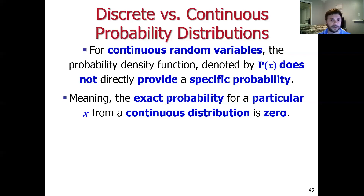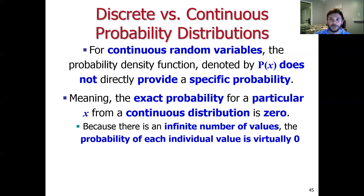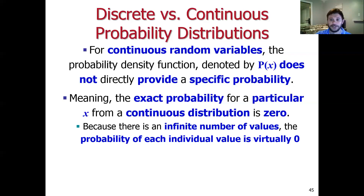The probability that you are exactly five foot eleven inches and four one-thousandths of a millimeter tall is very close to zero. There is an infinite number of values that a random variable could take on in a continuous distribution, and that means the probability of observing any one of those infinitely many outcomes is essentially zero.